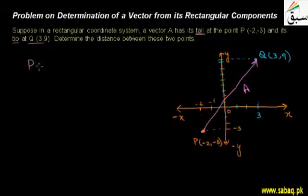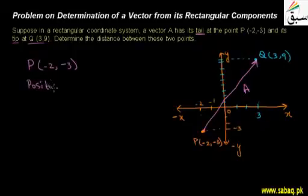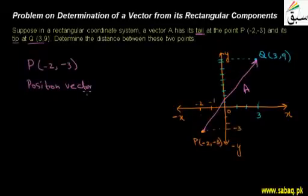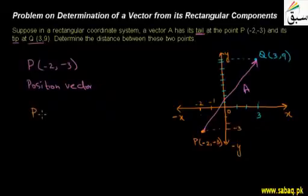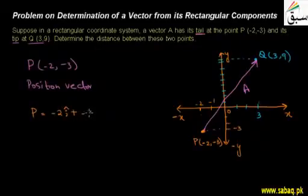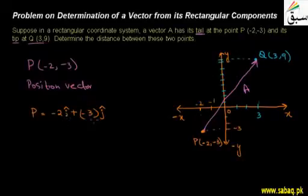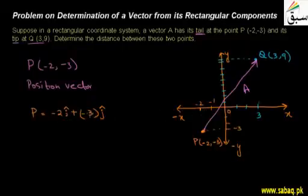First, I will write the position vector of point P, which is (-2, -3). The position vector P will be: minus 2 times î plus minus 3 times ĵ. Here, î is the unit vector in the X direction and ĵ is the unit vector in the Y direction. So in the X direction, minus 2 distance moved, and in the Y direction, minus 3 distance moved. This is the position vector of P.